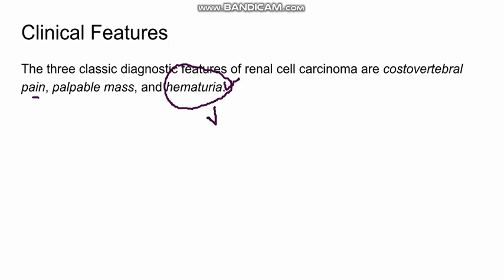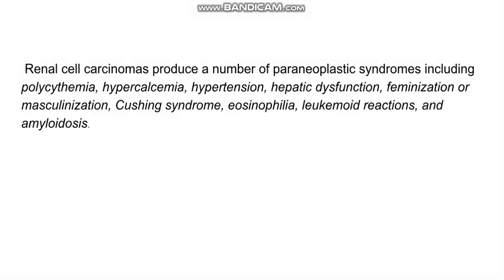Because the hematuria is microscopic, sometimes the diagnosis is delayed. The patient can also present with paraneoplastic syndrome because renal cell carcinoma is known to produce a number of paraneoplastic syndromes including polycythemia, hypercalcemia, hypertension, Cushing's syndrome, and amyloidosis. So the patient can present with these features also.